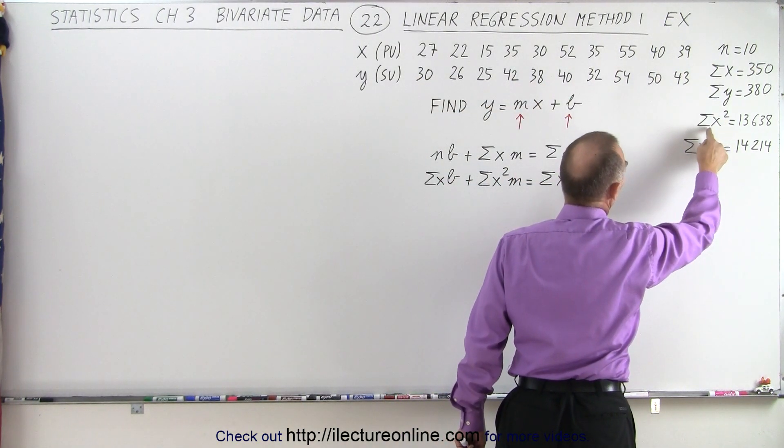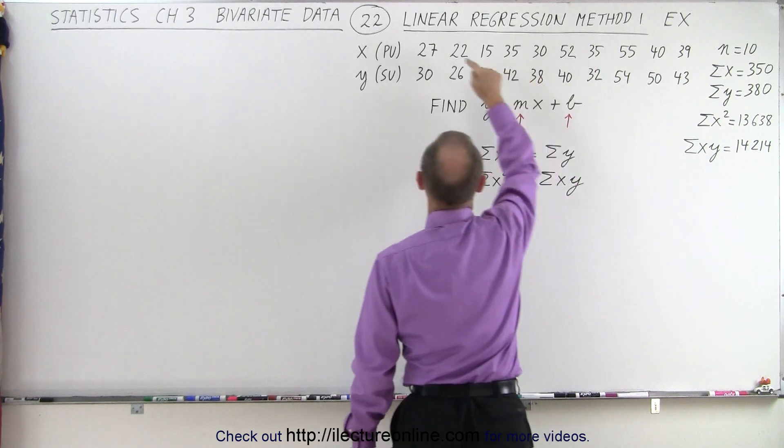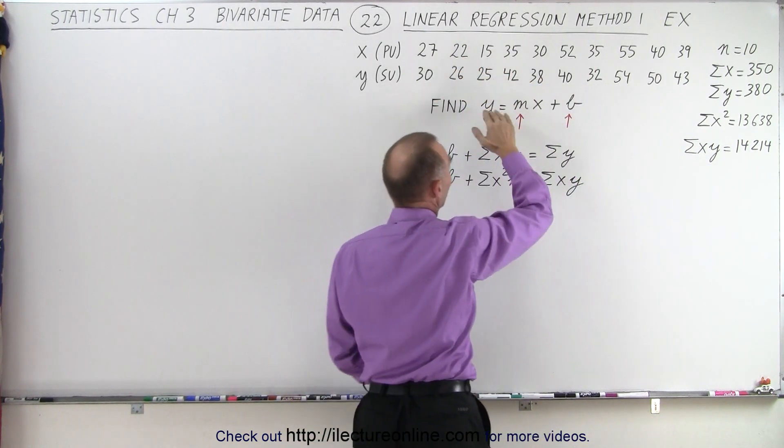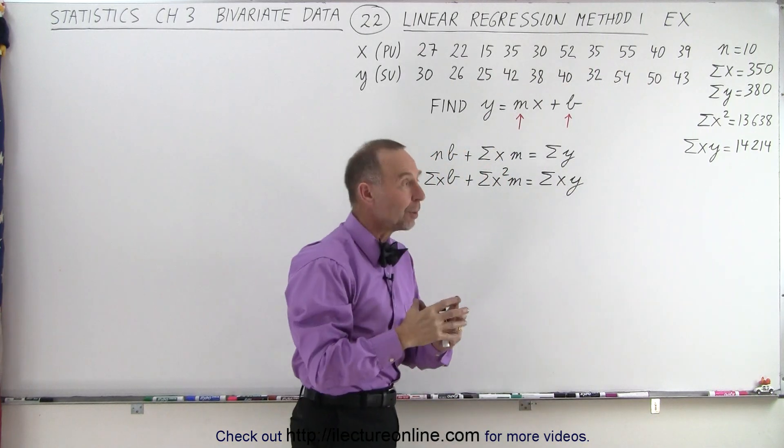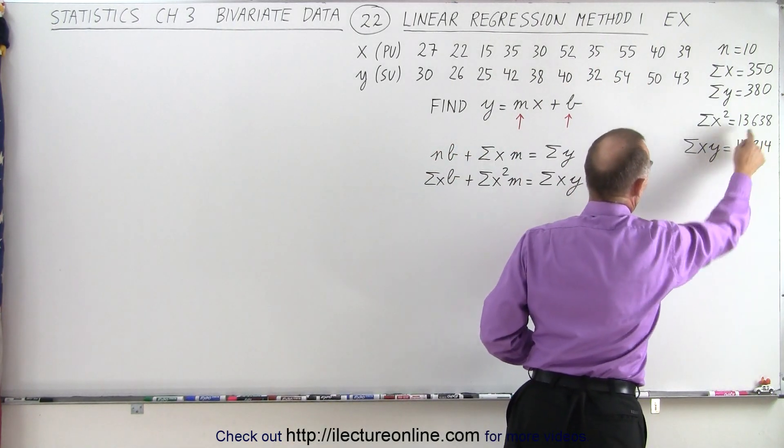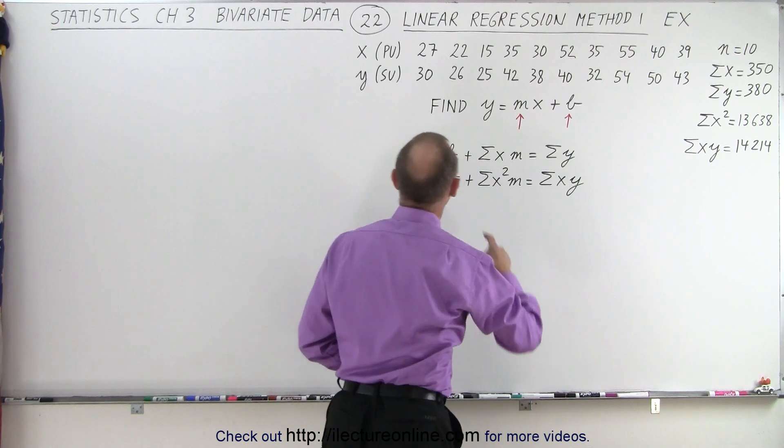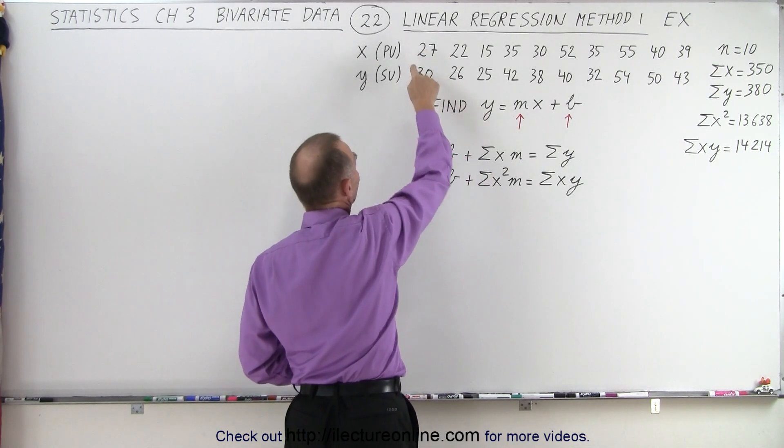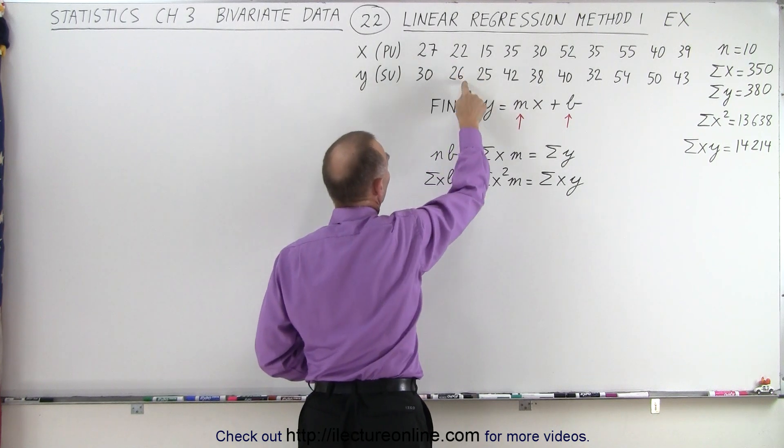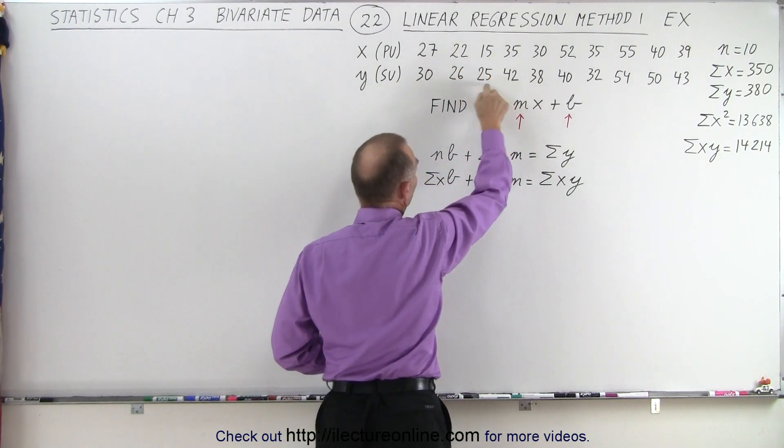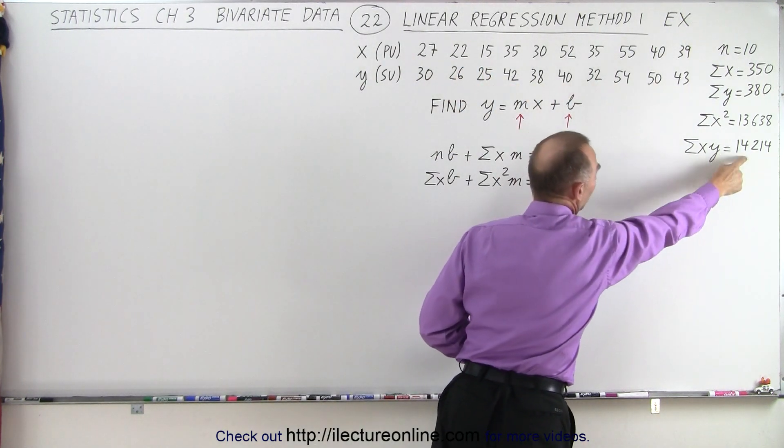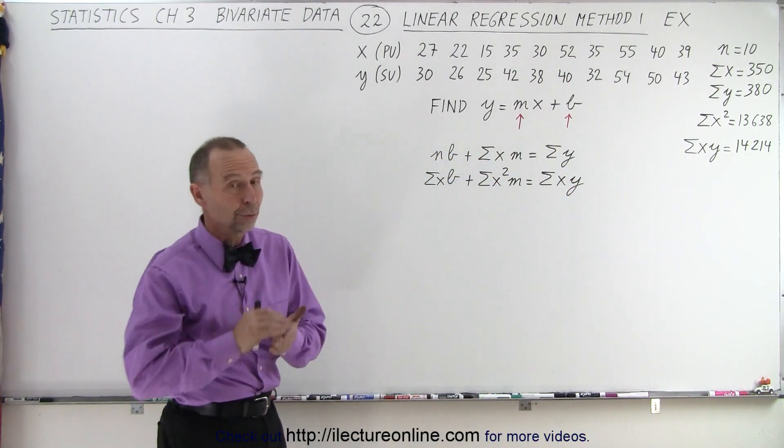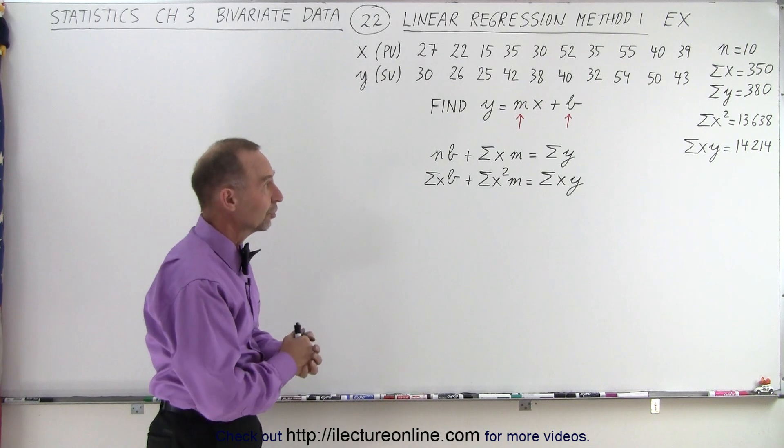Then we need to find the sum of all the x values squared. So we square each one of them, 27 squared plus 22 squared plus 15 squared, all the way through, add them all up, and that gives you a value of 13,638. And finally, the product of all the x and y values, and you sum them all up, 27 times 30 plus 22 times 26 plus 15 times 25, all the way through, add them all up, and you get 14,214. You may want to go through that yourself to verify that those are the numbers you get.